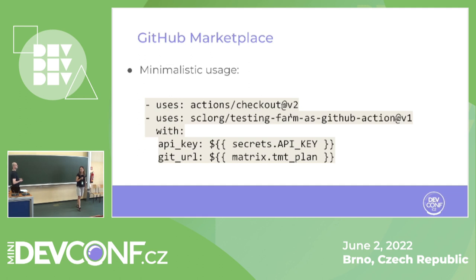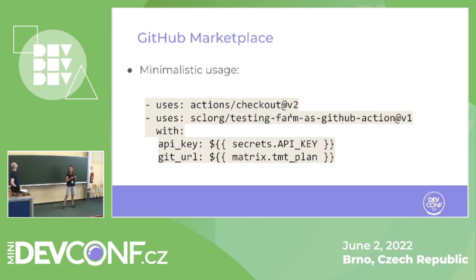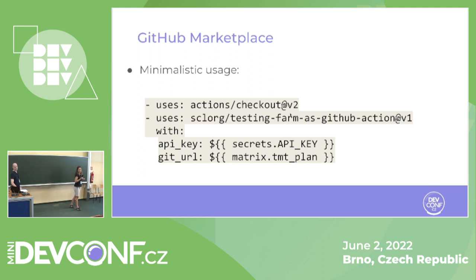The usage is really minimalistic. The only thing — besides scheduling or considering your trigger — is that you need to prepare your GitHub repository. You can use the checkout action for example, or do it manually. Then you call our Testing Farm GitHub Action and specify the two compulsory inputs: the API key, in order to communicate with the Testing Farm API, and a TMT plan. The Testing Farm as a GitHub Action is highly configurable — there are many other options which you can check out in the GitHub Marketplace.